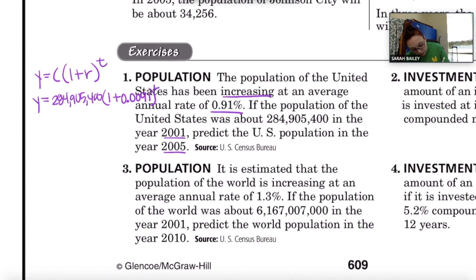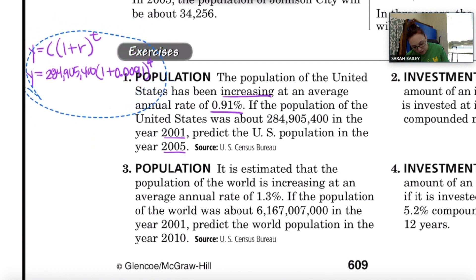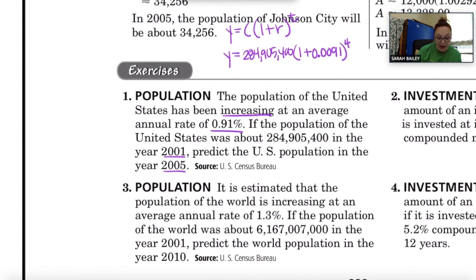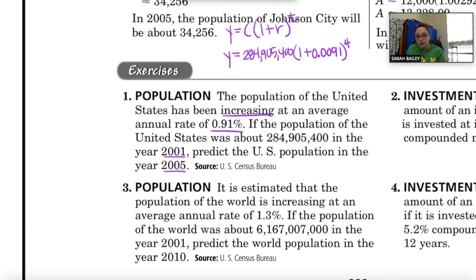The amount of time: the initial population was given for the year 2001, and we want to know the population in 2005, which is four years ahead, so t equals 4. I'm going to type all of that into my graphing calculator: 284,905,400 times (1 plus 0.0091) to the fourth power. And here's what I get — I'll copy that number down.